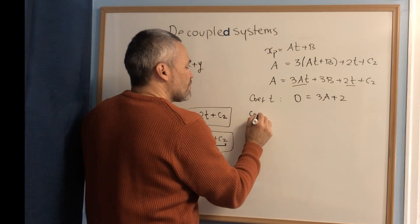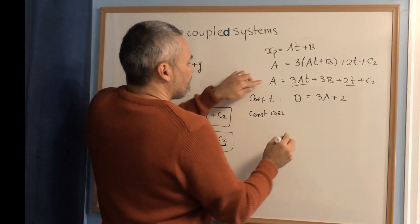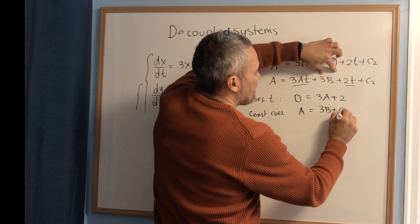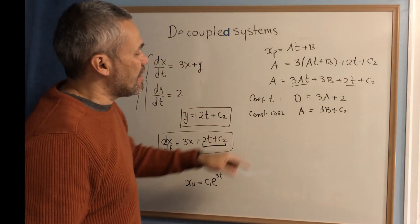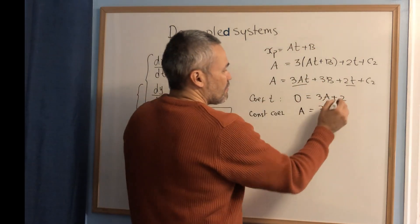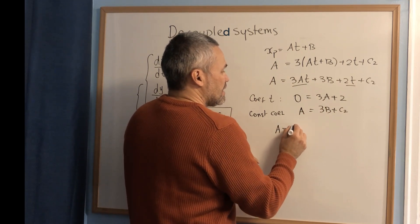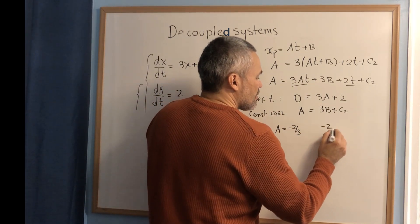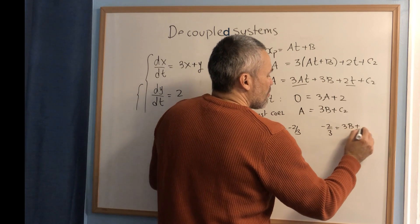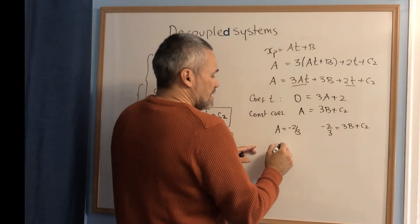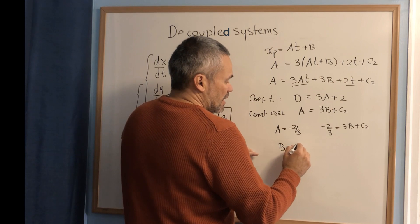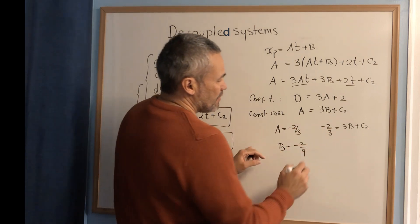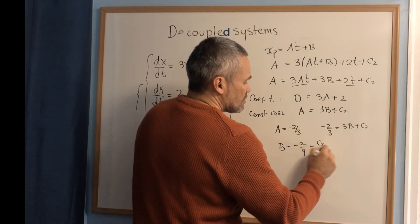The constant coefficient on the left is a, and on the right is 3b plus c2. We are solving for a and b. From the first equation, 0 equals 3a plus 2, so a equals negative two-thirds. Substituting into the constant equation: negative two-thirds equals 3b plus c2, which gives b equals negative 2/9 minus c2 over 3.